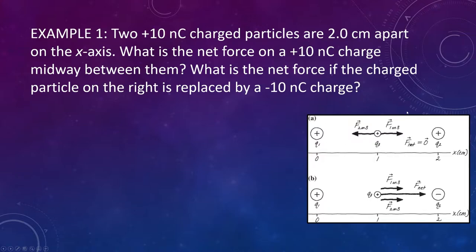They're along the x-axis — we've got two charges Q1 and Q2, and we're placing a third charge right in the middle of them. Everything's positive in this example. So Q1 is going to repel Q3 off to the right — that's F1 on 3. Q2 is also positive, so it's going to try to push back on charge 3 — that is force F2 on 3. We're going to see a force in both directions.